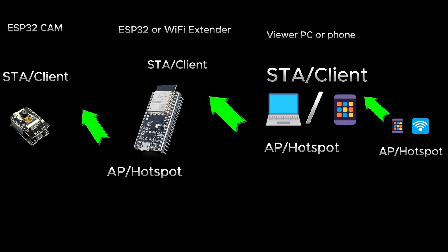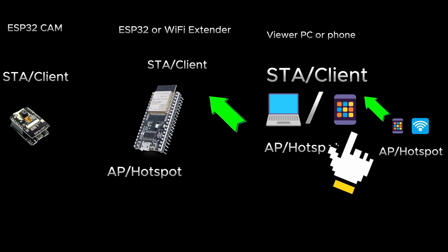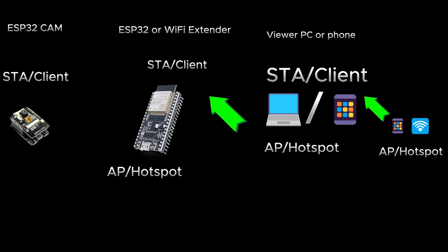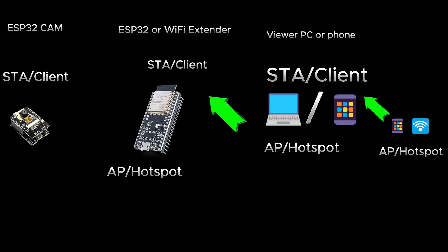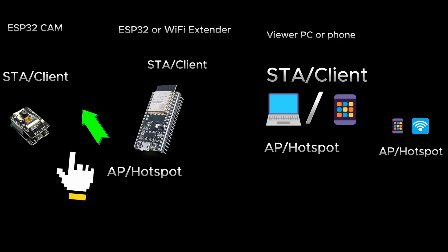In the second method we do the same steps but also add a WiFi extender in between. I'm using an ESP32 as the WiFi extender. The laptop connects to the hotspot and gets the IP address, then the laptop's hotspot gets connected to by the ESP32 extender, which also puts up its own hotspot for the ESP32-CAM to connect to.